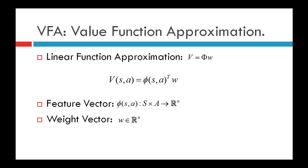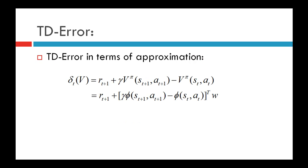The TD error is defined as immediate reward R_{T+1} plus gamma times V(S_{T+1}, A_{T+1}) minus V(S_T, A_T). In terms of function approximation, we represent the value function for state-action pair (S_{T+1}, A_{T+1}) as phi(S_{T+1}, A_{T+1}) transpose W, and likewise for (S_T, A_T). So the TD error becomes R_{T+1} plus gamma times phi(S_{T+1}, A_{T+1}) minus phi(S_T, A_T) transpose W. This is the TD error in terms of approximation for the value function.